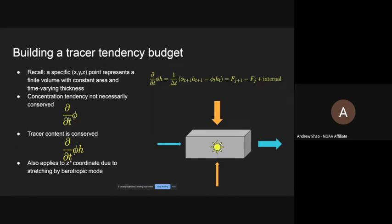This tracer content being conserved in the sense of tracer tendency also applies to the Z-star coordinate in MOM6, because the Z-star coordinate stretches the water column due to barotropic movement. So if you're looking at this in a volume-following context, this equation — D/Dt(φ·H), where φ is the tracer concentration — shows that you look at it as a convergence of fluxes within the box. You have φ at time n+1 times the thickness at n+1 minus φ times the thickness at time n, and that difference equals the convergence of fluxes: F_{j+1} is the upstream face and F_j is the downstream face, plus any internal sources or sinks.